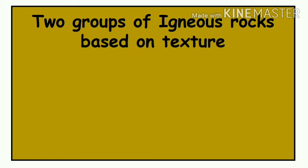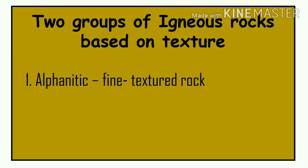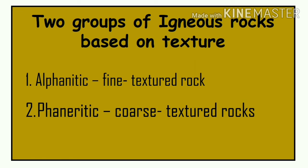Let us also discuss two groups of igneous rocks based on texture. Number one is aphanitic — a fine-texture rock. Number two is phaneritic — a coarse-texture rock. Those are the two texture-based groups of igneous rocks.